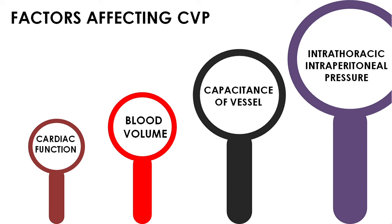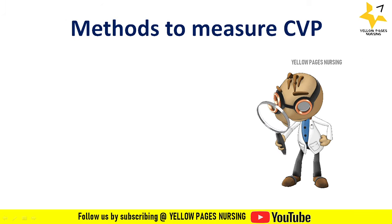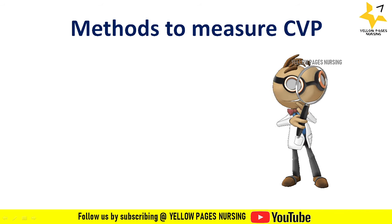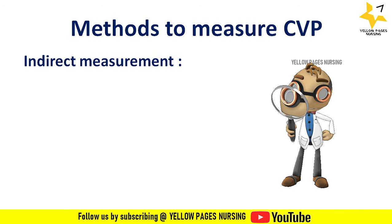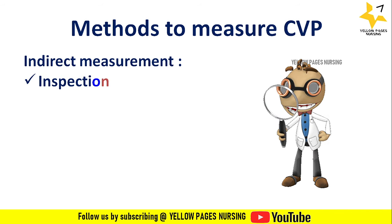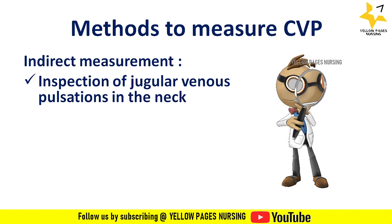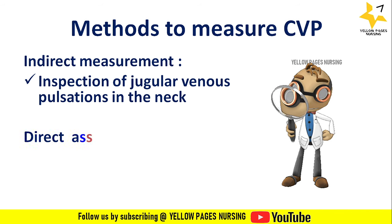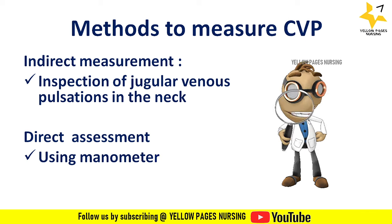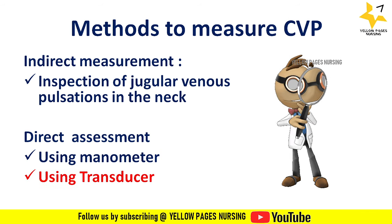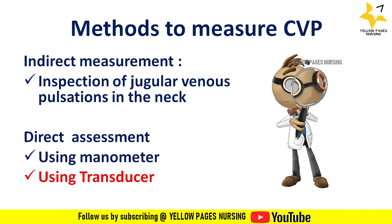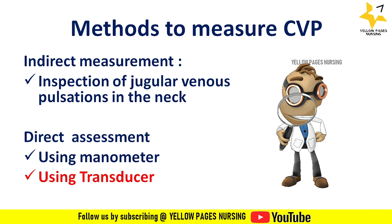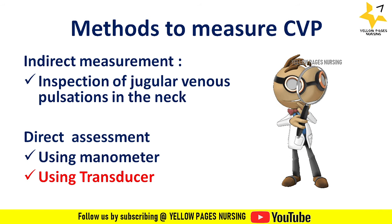Methods to measure central venous pressure include indirect measurement and direct measurement. Indirect measurement includes inspection of jugular venous pulsations in the neck. Direct assessment is done by using a manometer or a transducer. We will now be discussing monitoring central venous pressure by using a transducer.